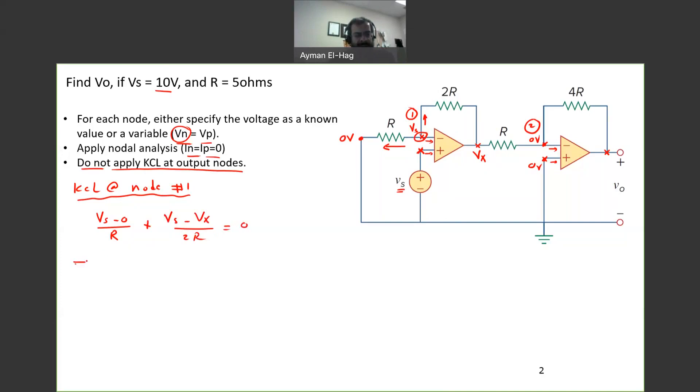Plus the current that going up towards Vx is Vs minus Vx divided by 2R equal to zero. Perfect. So I will multiply the whole thing by 2R. So multiply 2R with the whole equation. So we have here 2Vs plus Vs minus Vx equal to zero. We add these two terms. So we have 3Vs is equal to Vx. And this is my first equation.